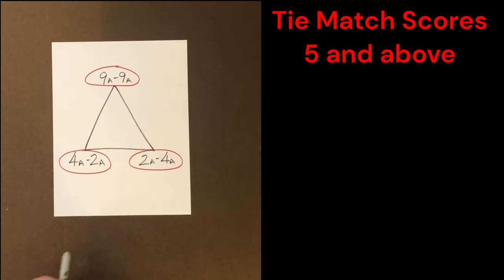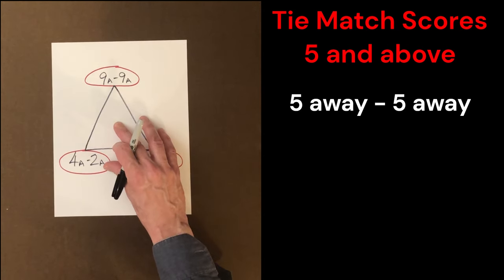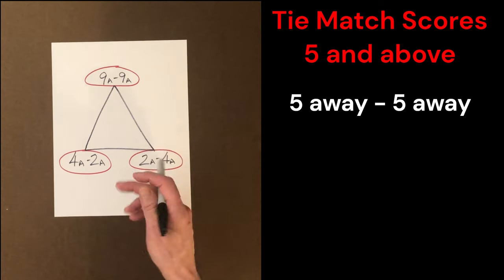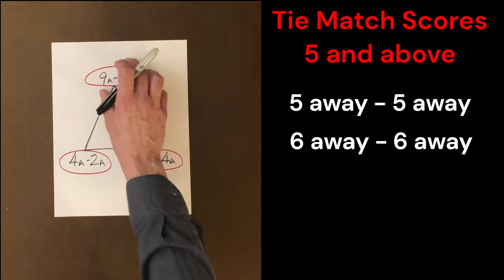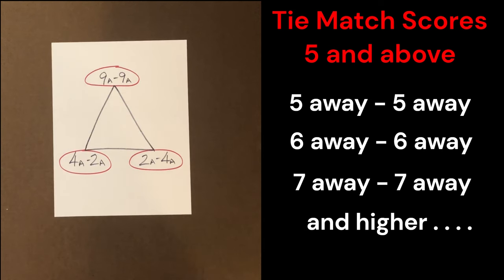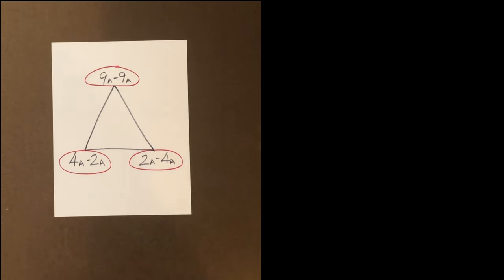For 9 away 9 away, as long as we are 5 away 5 away or higher, we use this as our match score. And at these three different match scores, we employ a different opening strategy. It's also a different cube strategy as well, but these videos will focus on our opening checker play.